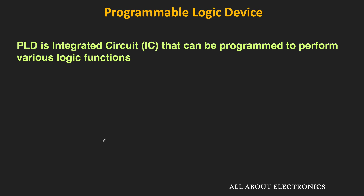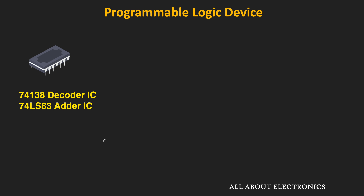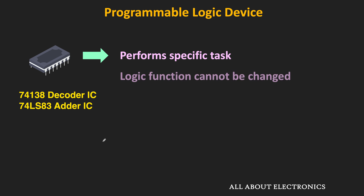A programmable logic device or PLD is a chip or integrated circuit that can be programmed to perform a variety of digital logic functions. If you see a conventional logic IC — for example, a decoder IC or an adder circuit IC — then it can perform only a specific task. The logic function performed by this IC cannot be changed. For example, this adder circuit IC can only perform the addition of two numbers; it is not possible to perform any other logic function.